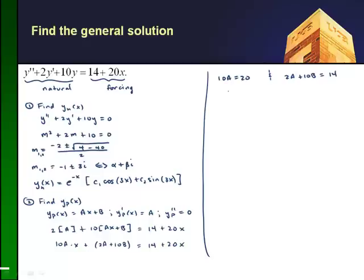So from 10a equals 20, it should be clear that a is just equal to 2. So I've determined one coefficient, and if I plug that into this other equation, I'll get 2 times 2, which is 4, plus 10b equals 14. If I transpose the 4, I'll get 10b is equal to 10, where b is equal to 1.